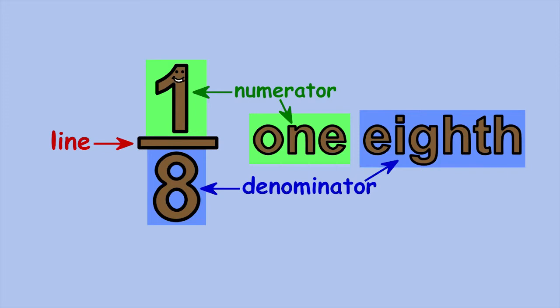When the number eight is written below the line, you say eighth instead of eight. So I'm one-eighth.